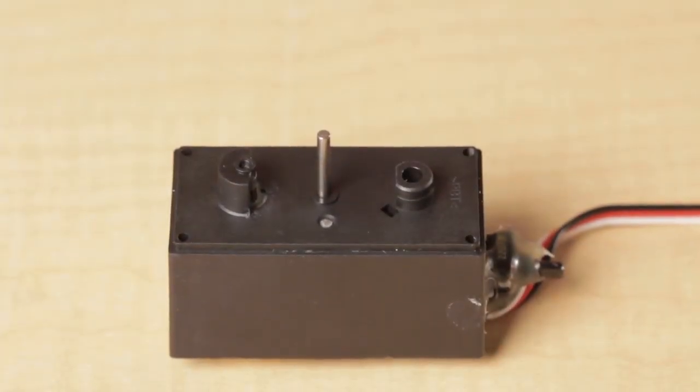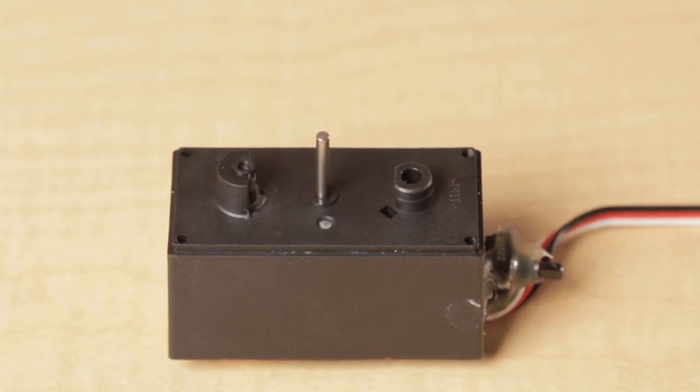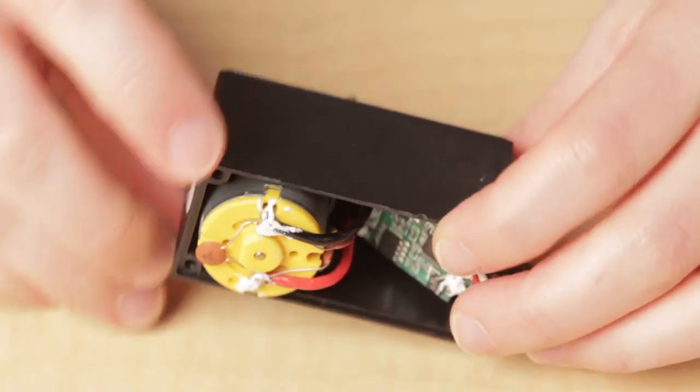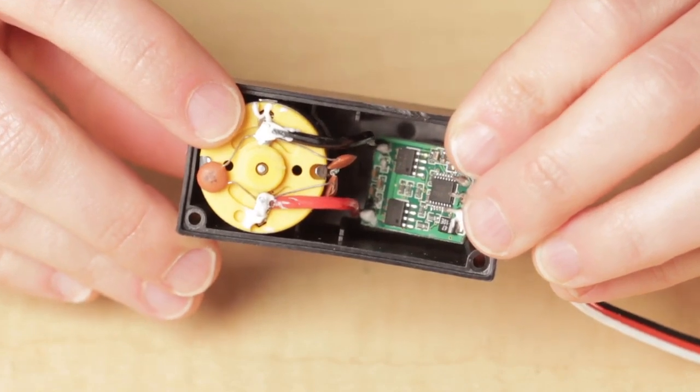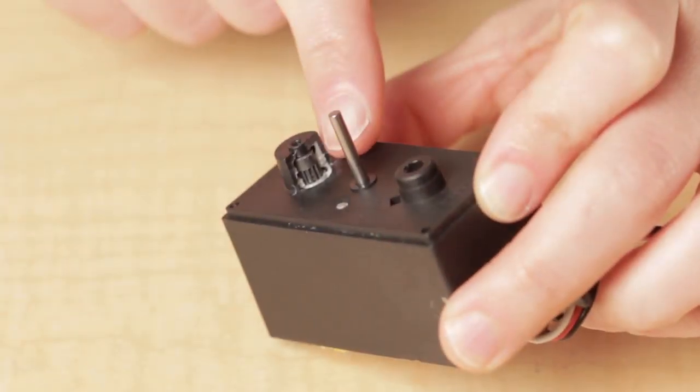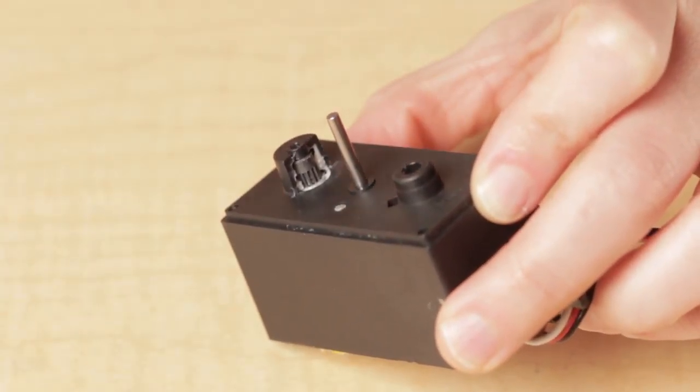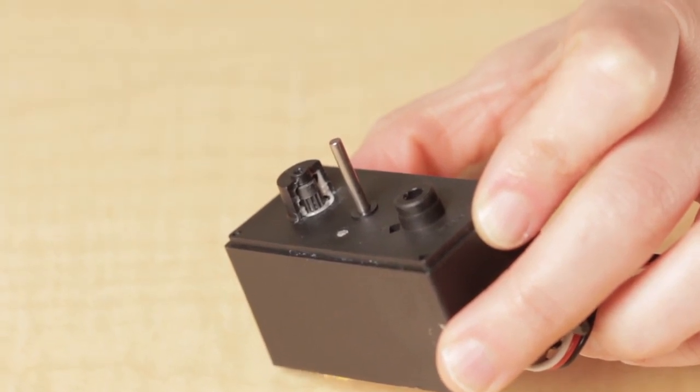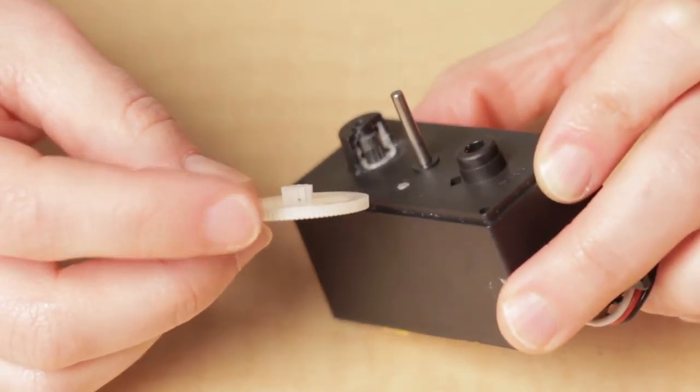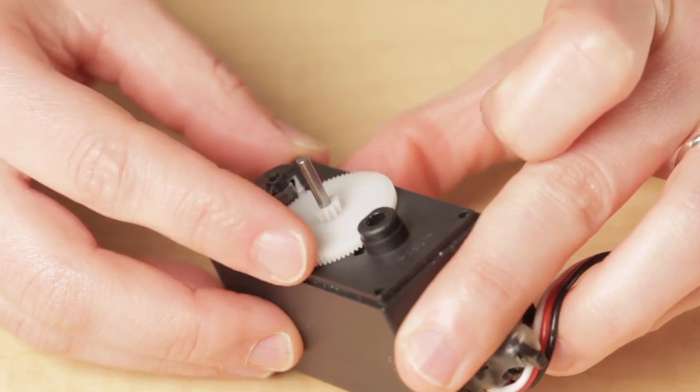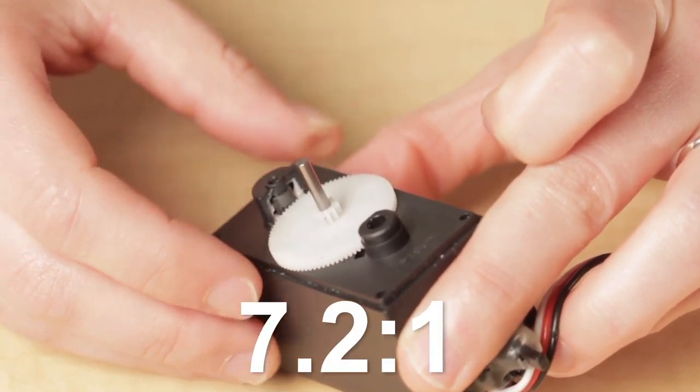First, let's get a quick overview of the design. Here's a servo motor with the case opened. Inside the case is a DC motor with a small pinion gear on it. The pinion has 10 teeth and is mated to a gear with 72 teeth. So the first pair provides a speed reduction of 7.2 to 1.